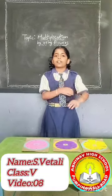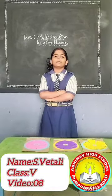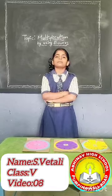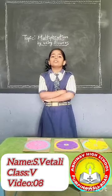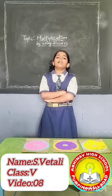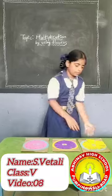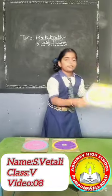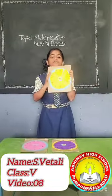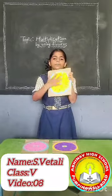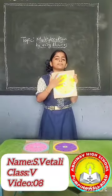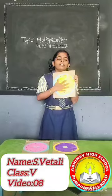Good morning one and all. I am Svetali from 5th Standard in Amino Concept School. Today my topic is Multiplications with the Help of Blubbers. Firstly, take two paper blubbers with dual petals, please. Then note 1 to 12 numbers on the first blubber.